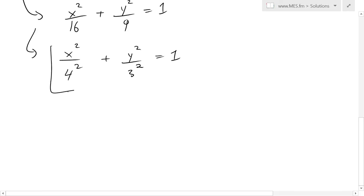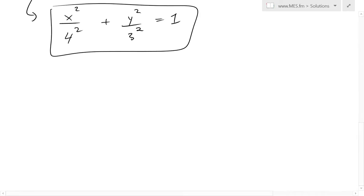So now that it's in standard ellipse form, we could get our variables. In this case we have that a is going to be actually just here, a equals 4, and our b is equal to 3 right here.